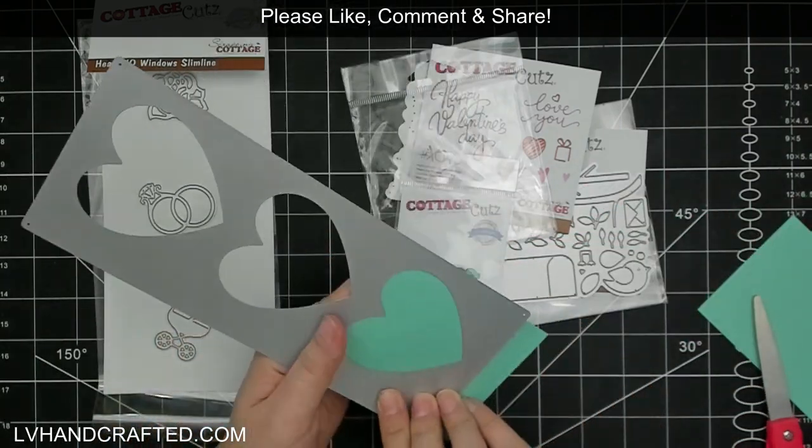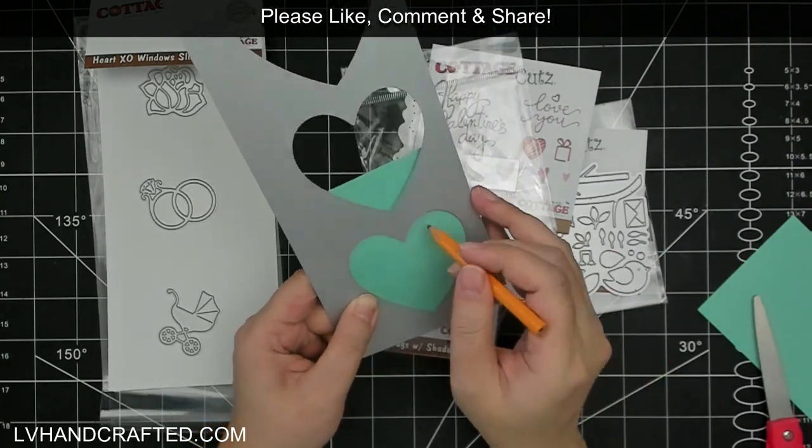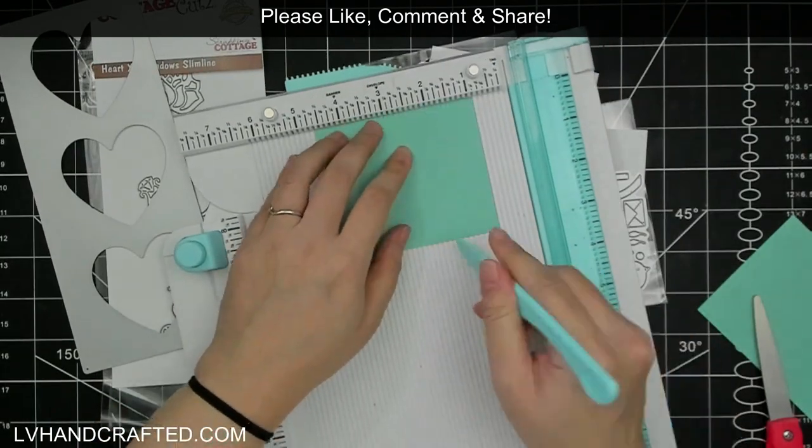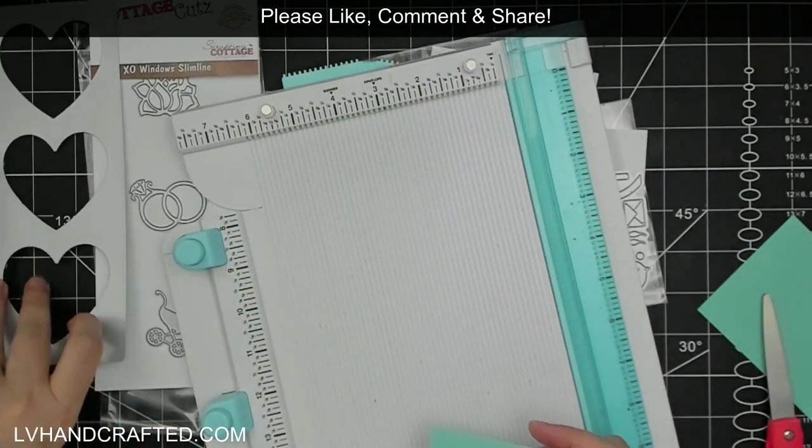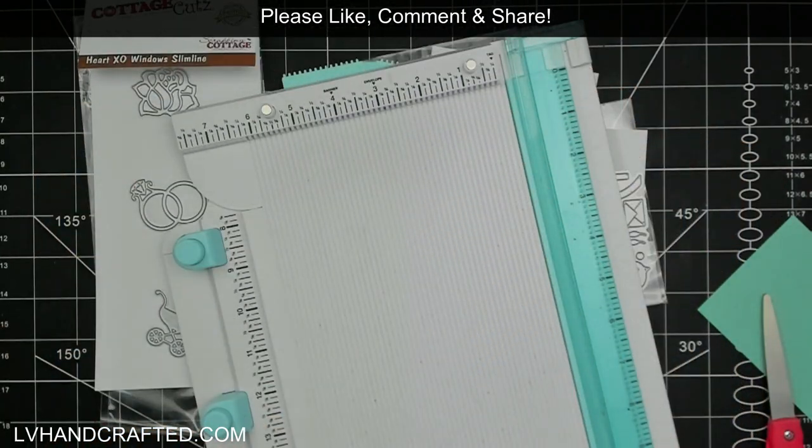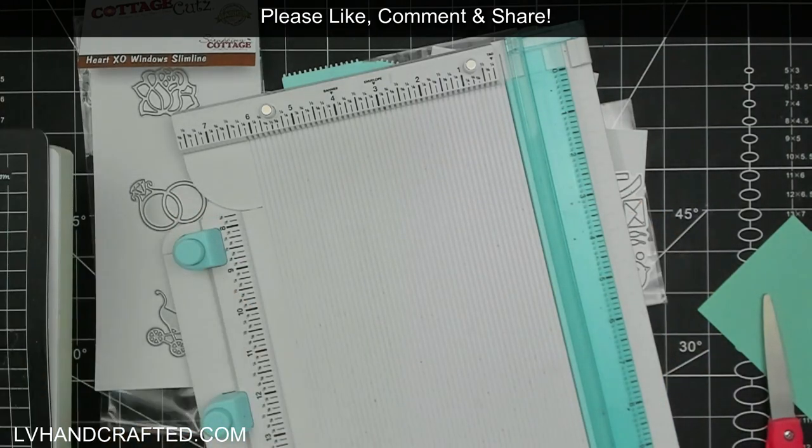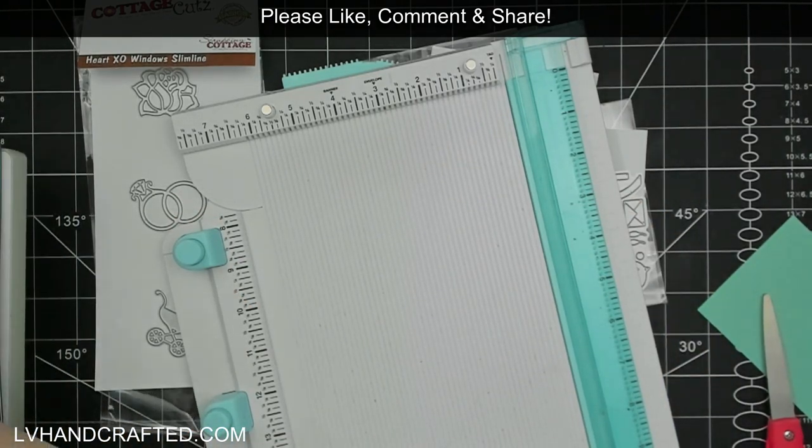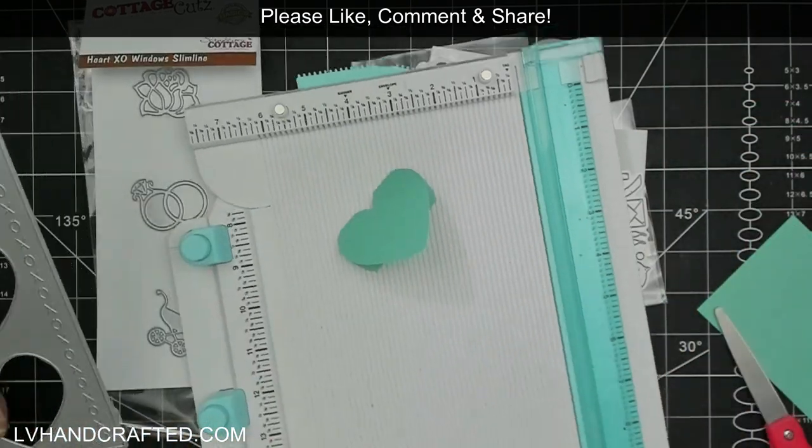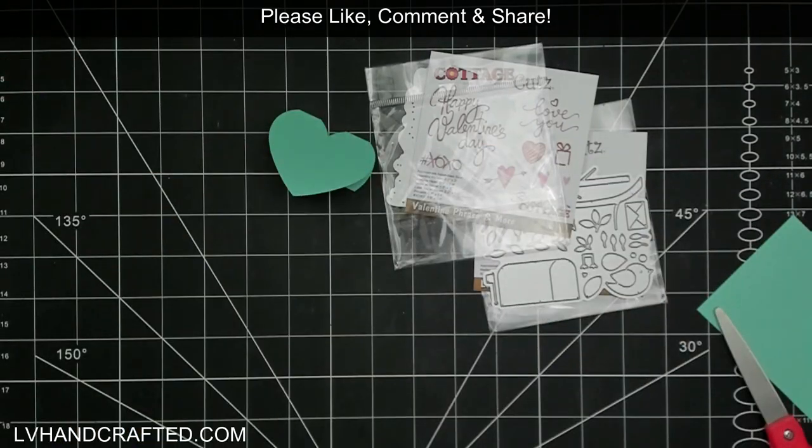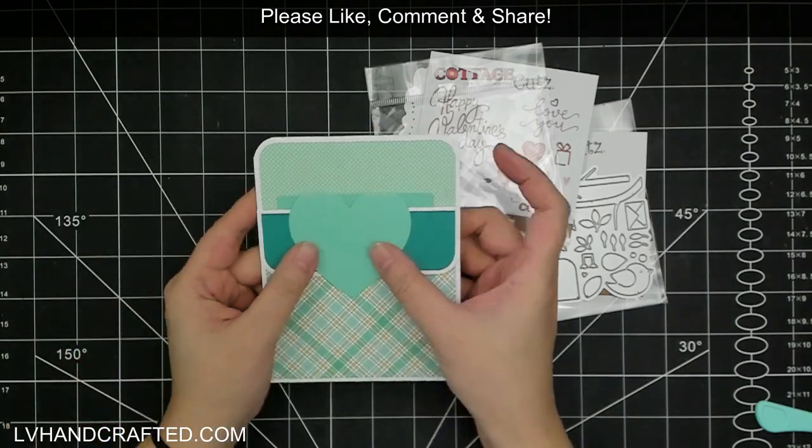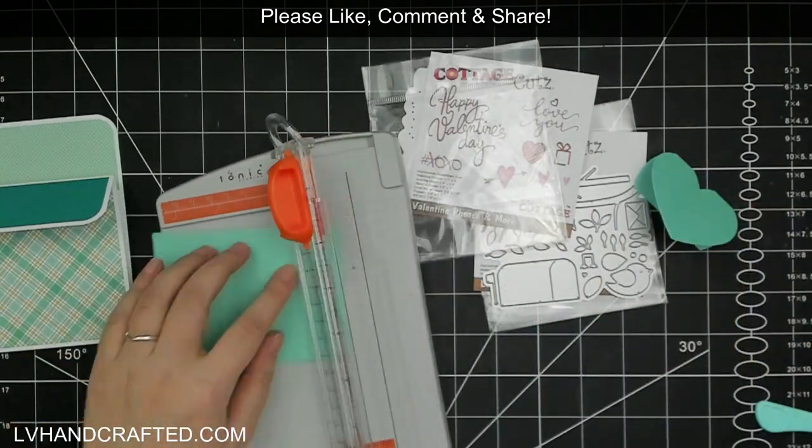I've pulled out the heart xo windows slimline die set which is another fabulous die set that will cut a panel to line your slimline cards with but I'm actually using it as a heart die to cut out this heart where I've actually scored and folded a piece of cardstock and I made sure that the folded edge was below the top cutting edge that way it doesn't actually cut off the fold and we get a little bit of a hinge.